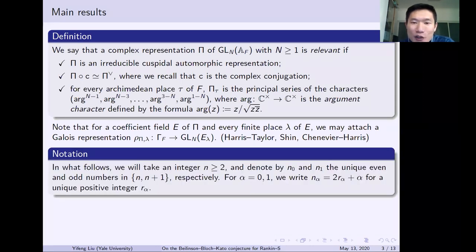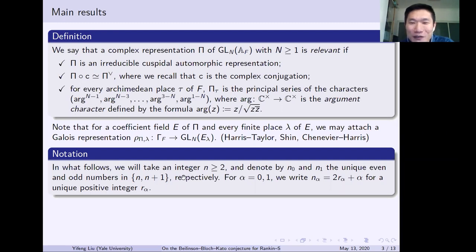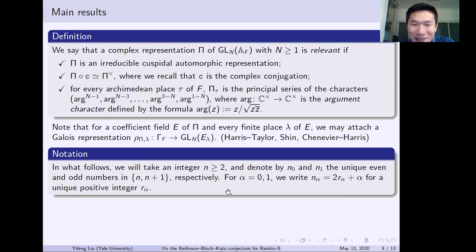Now I introduce an important notation for this talk. We consider an integer N at least two, and we denote by N_0 and N_1 the unique even and odd numbers among N and N+1. Sometimes N_0 is N+1 and sometimes N_1 is N+1, depending on the parity of N. We also denote by r_alpha the floor of half of N_alpha. This may look like a trivial definition, but it is very important notation — because in later arguments, the crucial thing is not which one is larger, but which one is even and which one is odd.